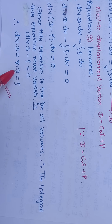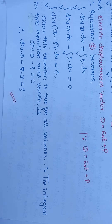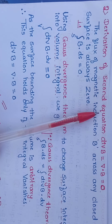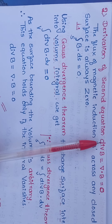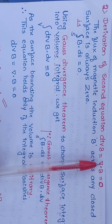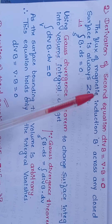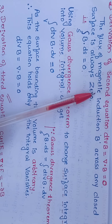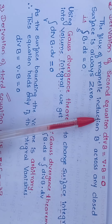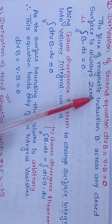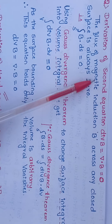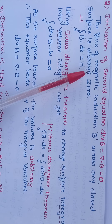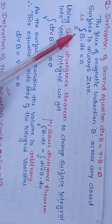Next is the derivation of Maxwell's second equation in differential form, that is divergence of B equal to 0, written as del dot B equal to 0. The flux of magnetic induction B across any closed surface is always zero.